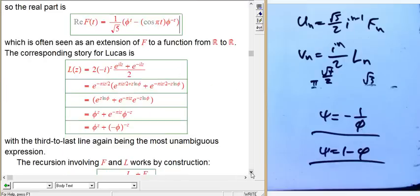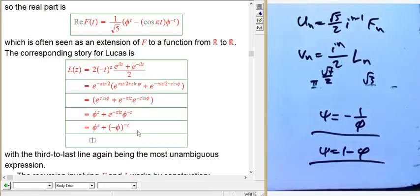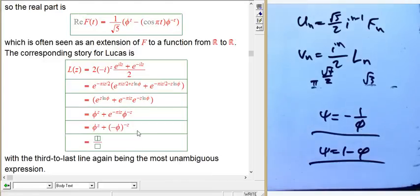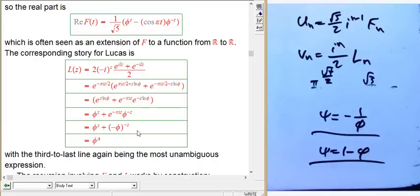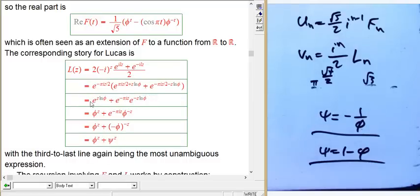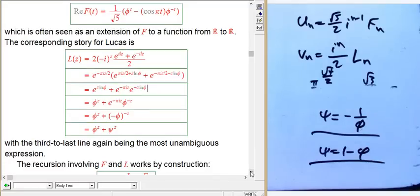If you want to know the corresponding story for Lucas just really quickly, it's, guess what? It's just, again, phi to the z plus minus phi to the minus z. You know, you could still write that as phi to the z plus psi to the z as long as it's properly interpreted. And the best way is to go all the way up to here. That's an unambiguous way to define what that means, and it works for any complex number. It's pretty cool.